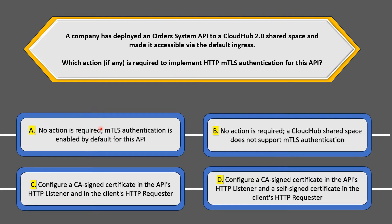There are four options. Option A: no actions are required — mutual TLS is available by default. Option B: CloudHub shared space does not support mutual TLS. Options C and D talk about configuring certificates in the HTTP listener and the client's HTTP requester respectively.